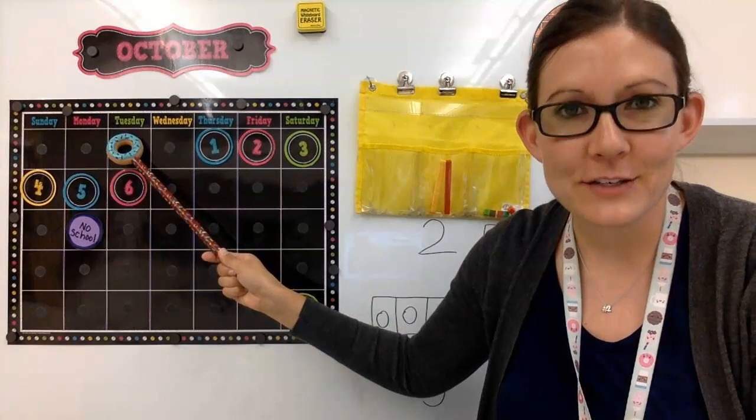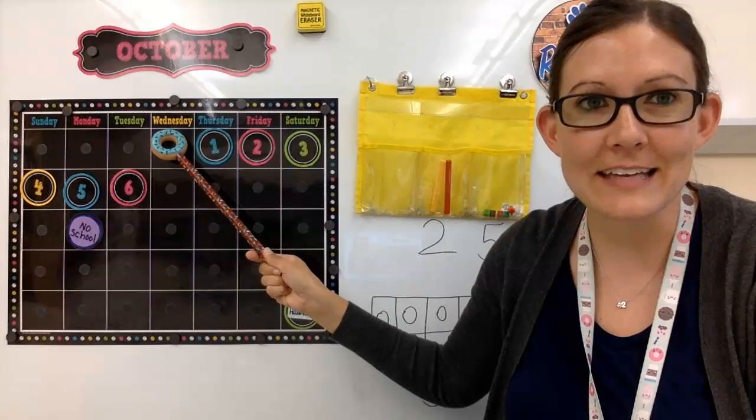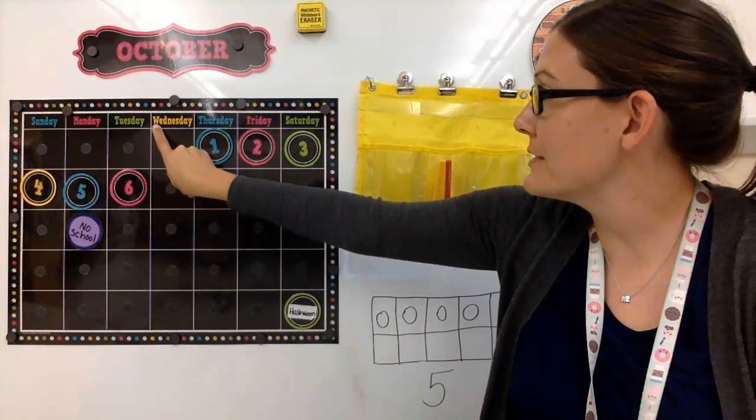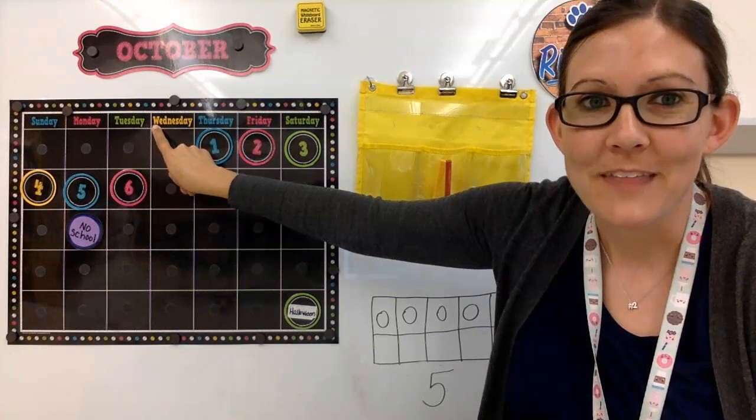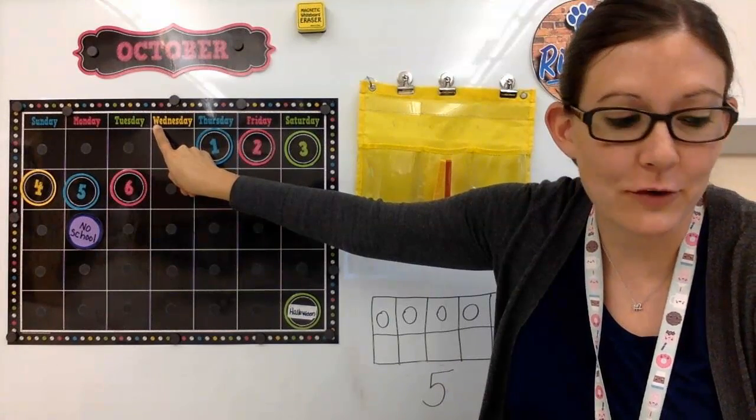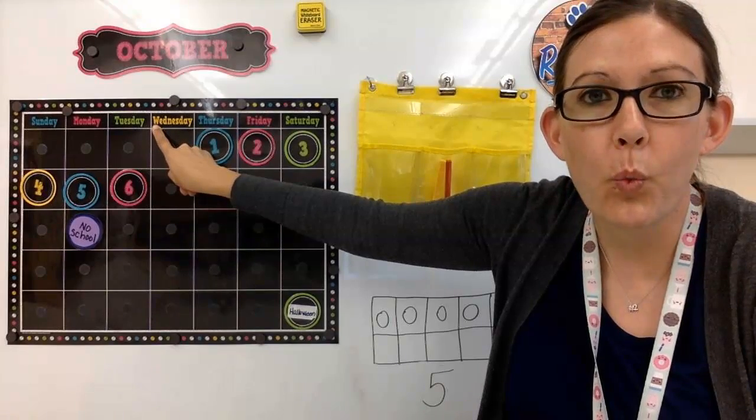If yesterday was Tuesday, what does that mean today is? I'm gonna teach you guys a little hint. Take a look at the first letter of that word. We've learned that letter already. That's a W. And what sound does the W make? Remember we did that one yesterday? The W says W.